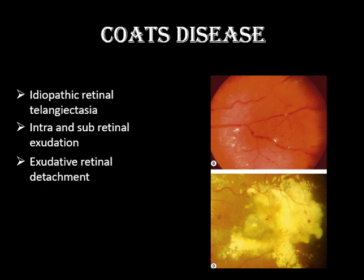The next topic is Coats disease — again a retinal vascular pathology. While Eales disease affects young adults in their 20s and 30s, Coats disease presents in young boys in the first decade of life, and is associated more with exudation rather than hemorrhage. Coats disease is basically an idiopathic retinal telangiectasia — telangiectasia meaning bulbous pouching and dilatation of the capillaries.